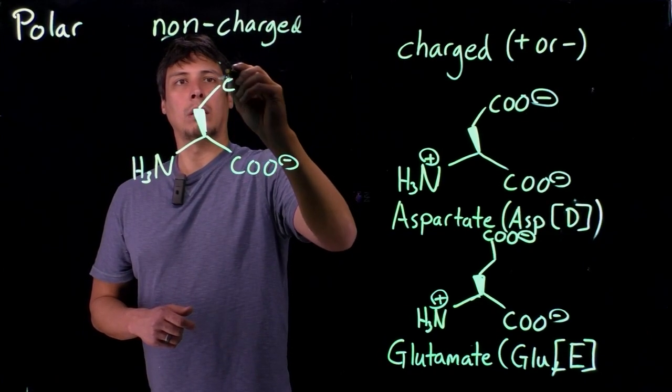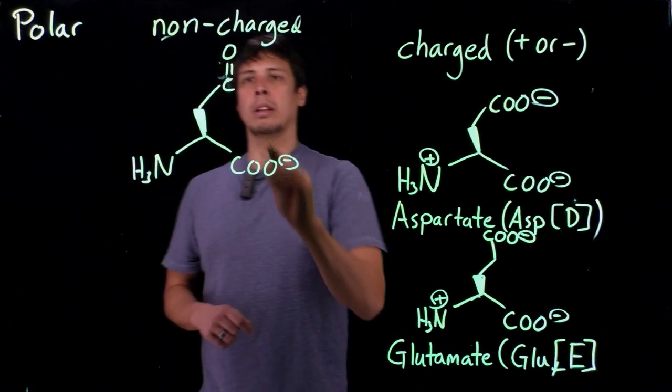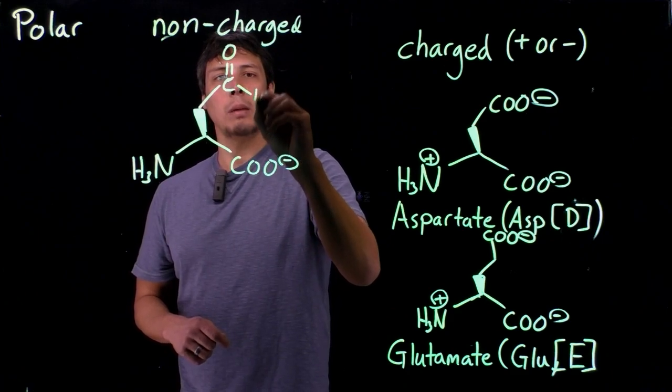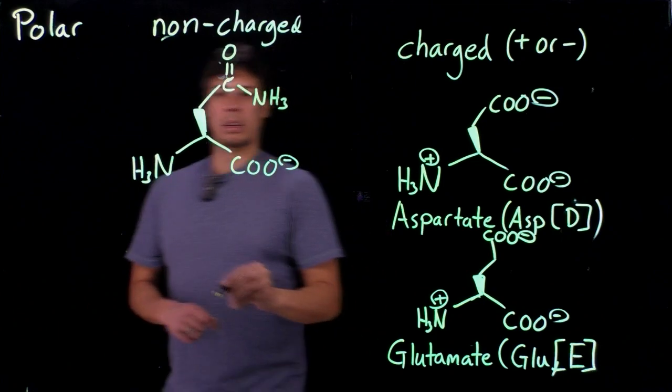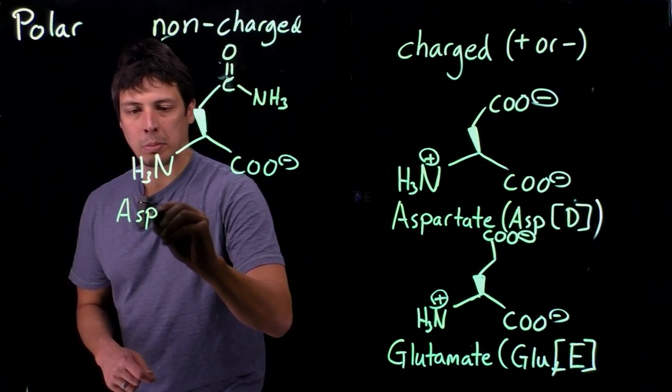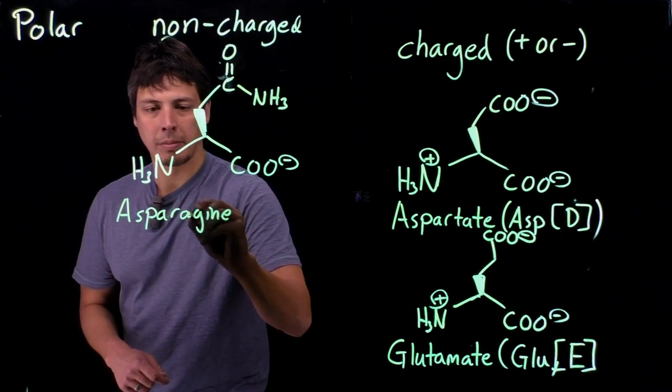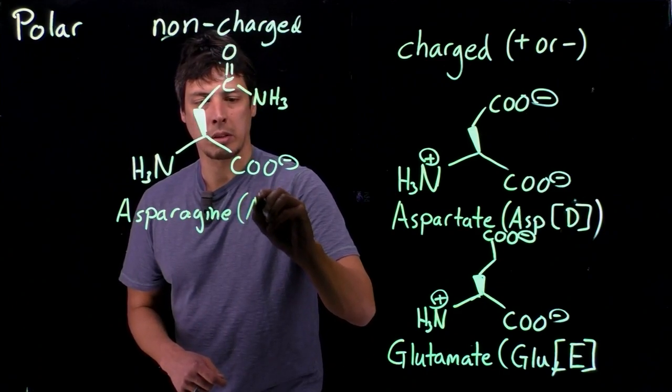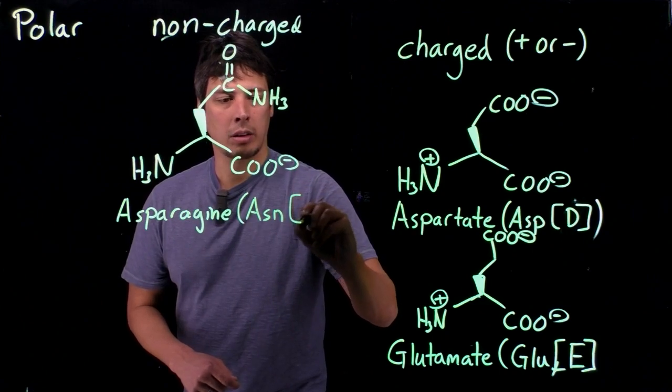We start as if we're going to draw aspartate again. But instead of this to mean a carboxylic acid, it's an amide functional group. And so this has a similar name to aspartate. This is called asparagine. And this has a similar three-letter code as aspartate too, where it's A-S-N. And the one-letter code is N.